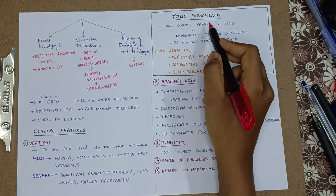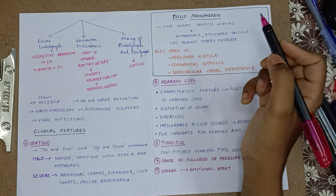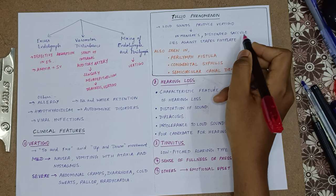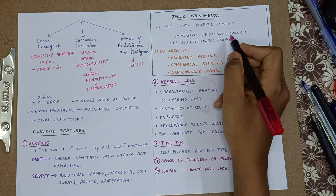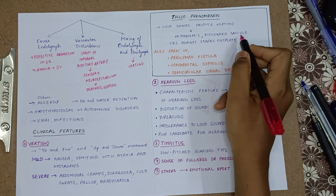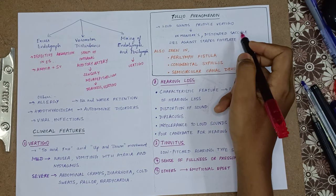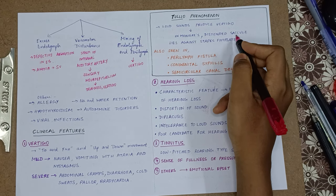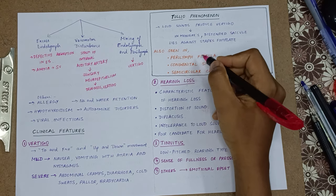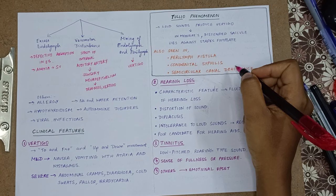Now in vertigo we will discuss the Tullio phenomenon. Tullio phenomenon occurs when loud sounds are heard — when loud sounds produce vertigo. In Meniere's disease there is a distended saccule because there is excess endolymph, and this saccule lies against the stapes footplate. The stapes conducts the sound and affects the saccule, producing vertigo. Tullio phenomenon is not only seen in Meniere's — it is also seen in perilymph fistula, congenital syphilis, and semicircular canal dehiscence.